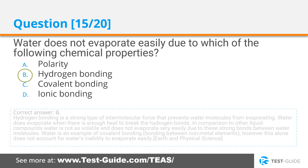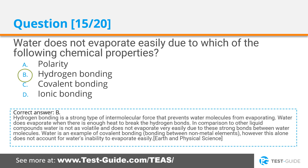Correct answer B. Hydrogen bonding is a strong type of intermolecular force that prevents water molecules from evaporating. Water does evaporate when there is enough heat to break the hydrogen bonds. In comparison to other liquid compounds, water is not as volatile and does not evaporate very easily due to these strong bonds between water molecules. Water is an example of covalent bonding between non-metal elements; however, this alone does not account for water's inability to evaporate easily.